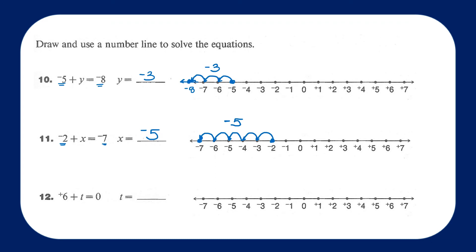Question 12: I'm starting at the integer positive 6 and I want to land on 0. So I'm going to have to decrease my number by 1, 2, 3, 4, 5, 6 units — I'm decreasing it, so that is a negative 6. Positive 6 plus negative 6 equals 0. Thank you so much!